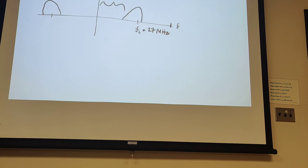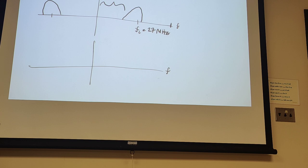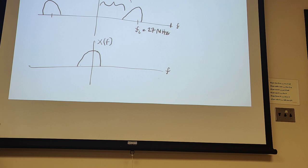That's the motivation for thinking about our signal centered at zero frequency. We want to have a way to analyze our signal just centered around DC. We call the signal at 27 megahertz the passband signal, and the one at DC the baseband equivalent signal. It's just a handy way to analyze the signal without dealing with this extra carrier frequency.